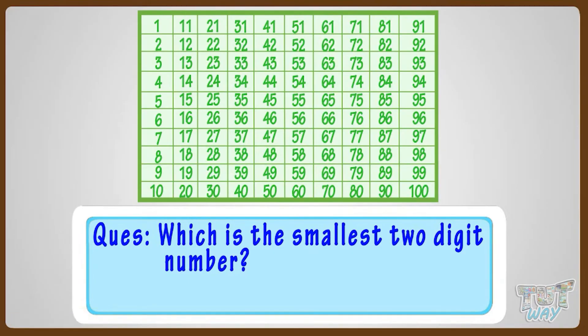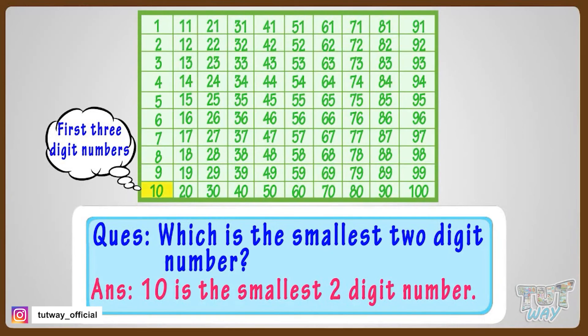Okay, two-digit numbers start from 10. So, 10 is the smallest two-digit number.